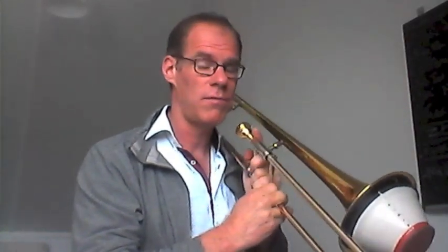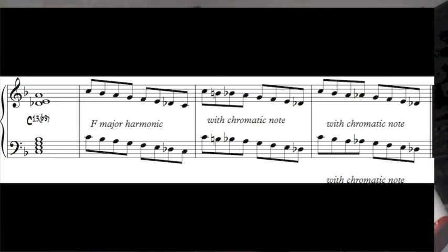There's a nice upper structure — a triad of A major that you can put on top of C7. The scale that you can play now is the same as before, but all the Ds are D-flats — all the 9s are flat 9s.